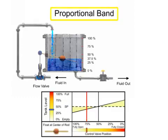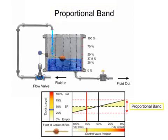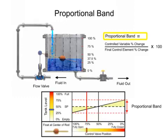Proportional band is defined as the percentage of change in the controlled variable which causes the final control element to go through 100% of its operating range. Proportional band is calculated by dividing the controlled variable percent change by the final control element percent change, multiplied by 100.